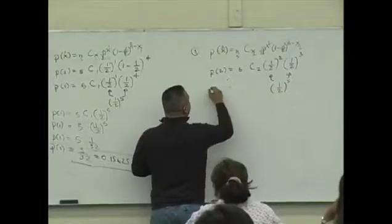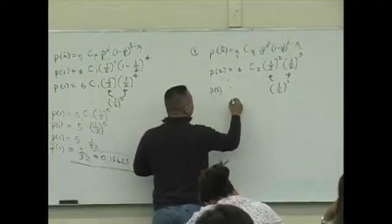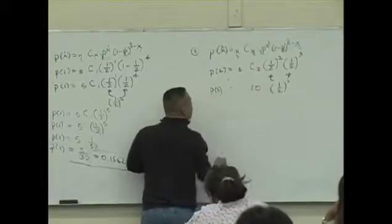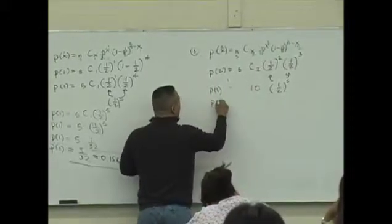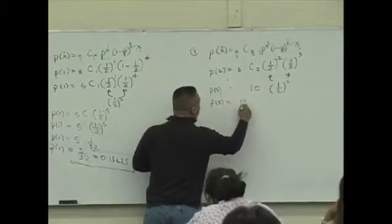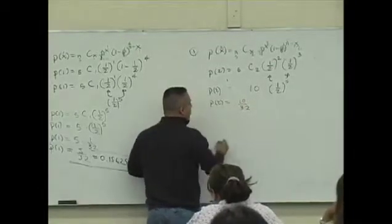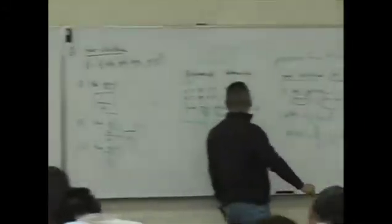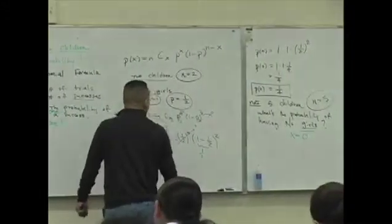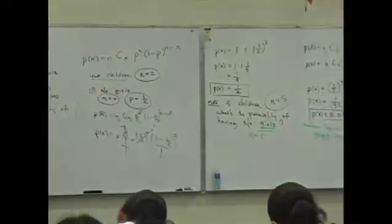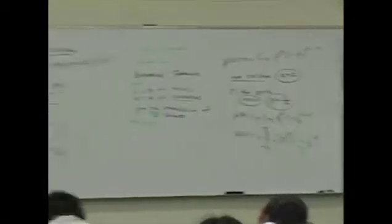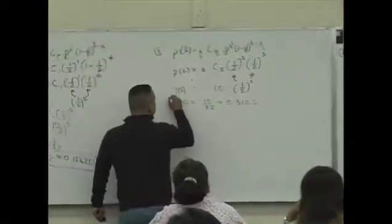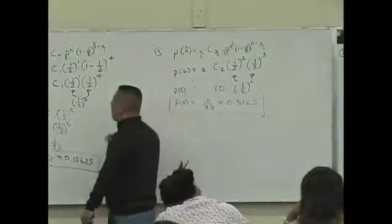You guys know what 5c2 is? What's 5c2? Is that 10? So this is 10 times 1 half to the fifth power, or simply 10 over 32 as a fraction. As a decimal, it's 10 times this, point, where is it at? 0, 3, 1, 2, 5. Over there. It just moves the decimal one place to the right. 0, 3, 1, 2, 5. So this is the probability that you have two girls.